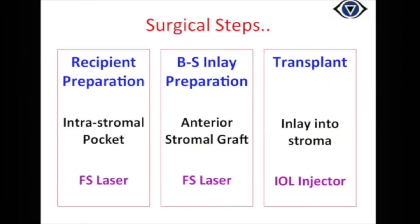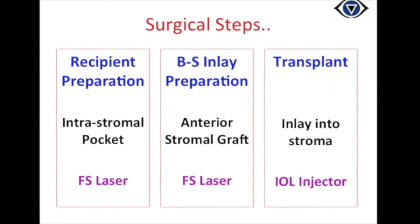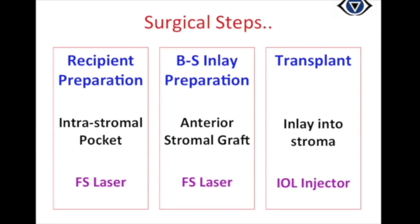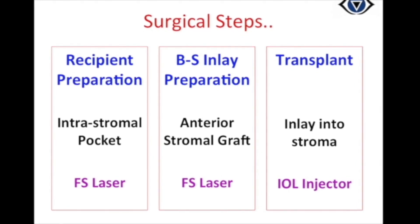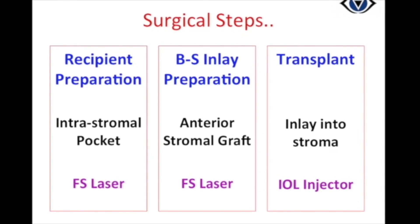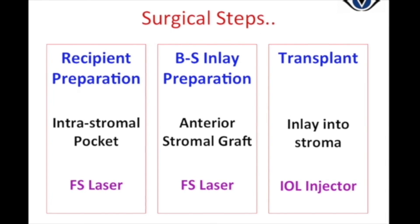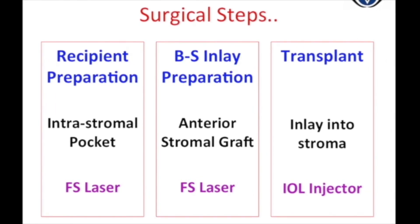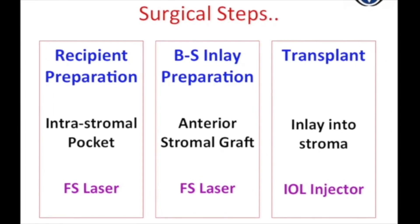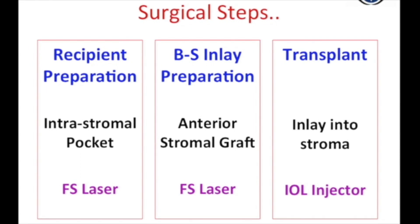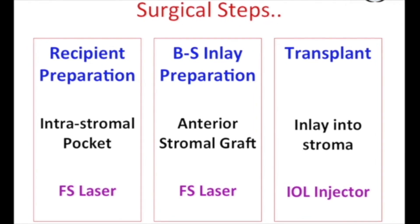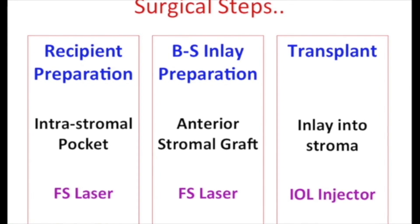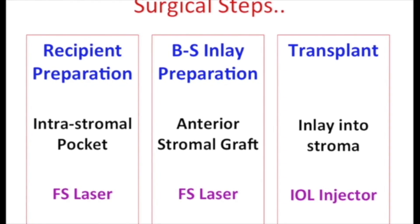Surgical steps include creation of an intra-stromal pocket in the keratoconic cornea, creation of the Bowman Stromal Inlay from a donor graft, and transplant of the inlay into the stroma. For the first two steps, femtosecond laser was used, and for the transplant, the IOL injector was used.